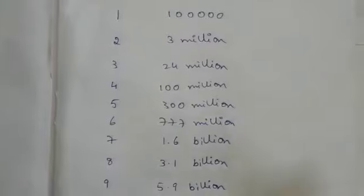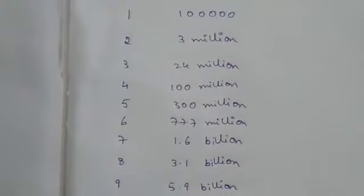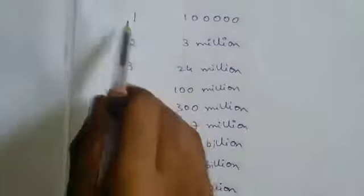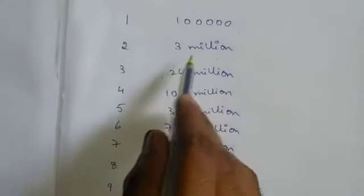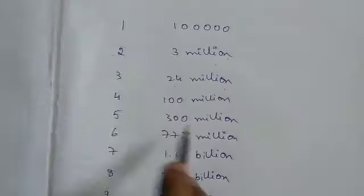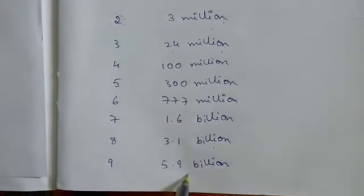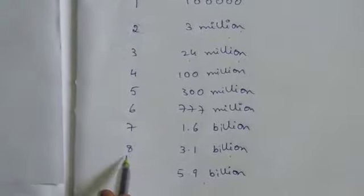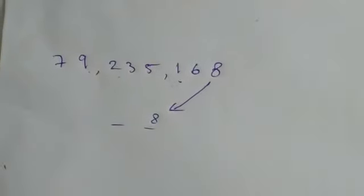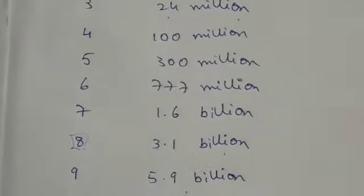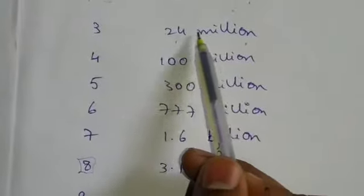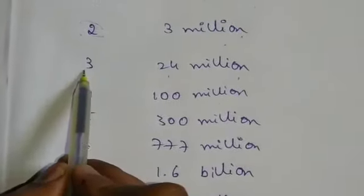Memorize this thing, it's just a two minutes work. If your number lies between hundred thousand to three million, you should use one as tens place. If your number lies between three million to twenty four million, you should use two as tens place. If your number lies between 3.1 billion to 5.9 billion, you should replace the tens place by eight. Observe here, it's seventy nine million, so seventy nine million lies between twenty four million to two hundred million, so you should replace tens place by three.